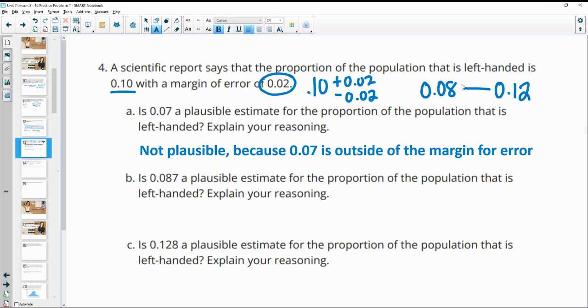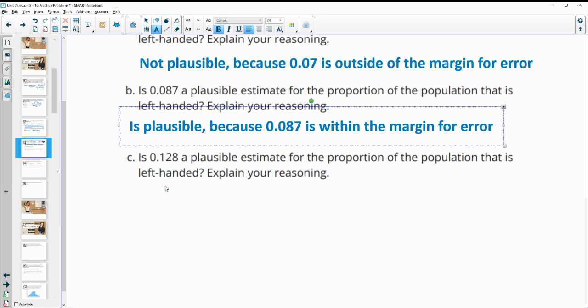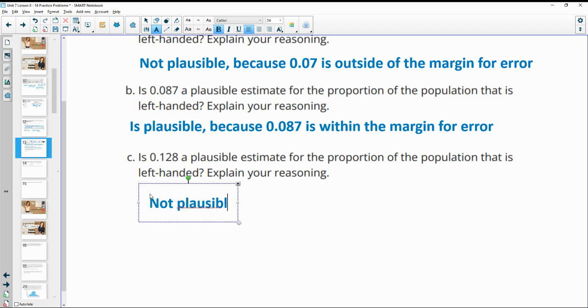0.087 is between there. So this one is plausible because 0.087 is within the margin of error. And then 0.128 is not plausible because it's outside of it. It's too big. So not plausible, again, because it is outside of the margin of error.